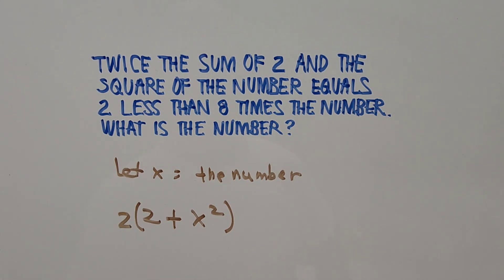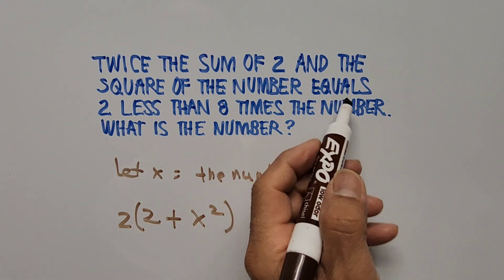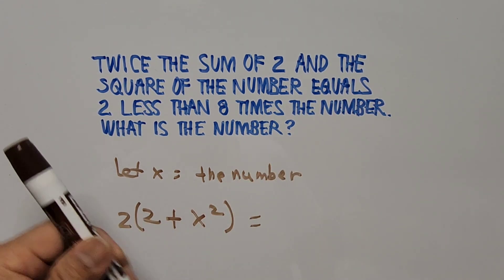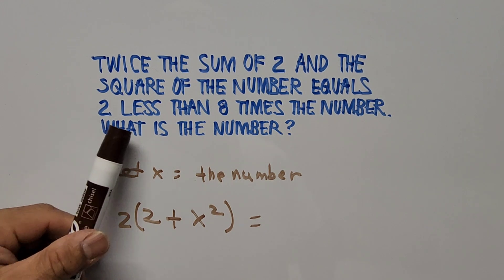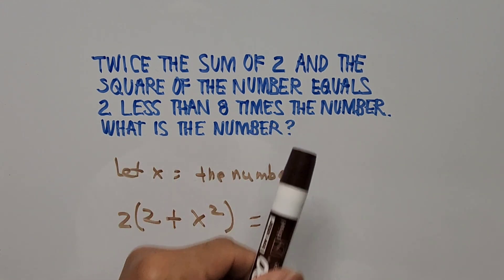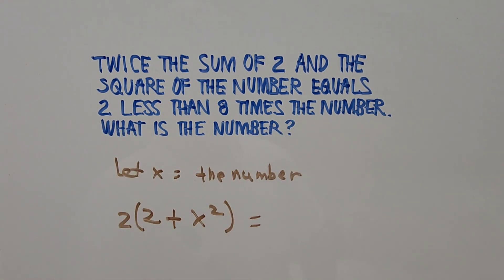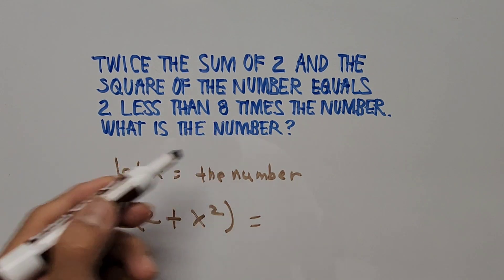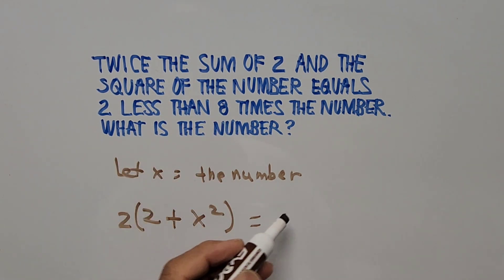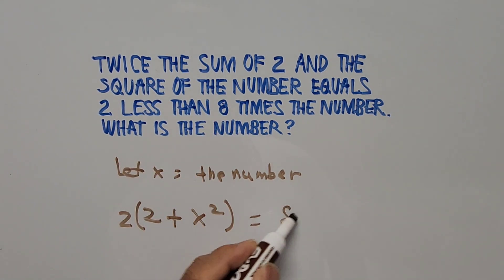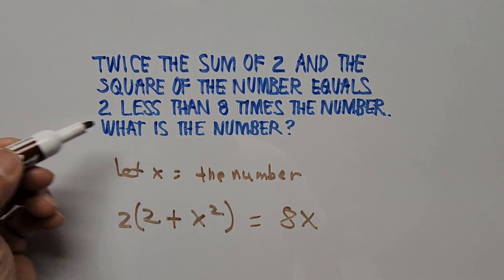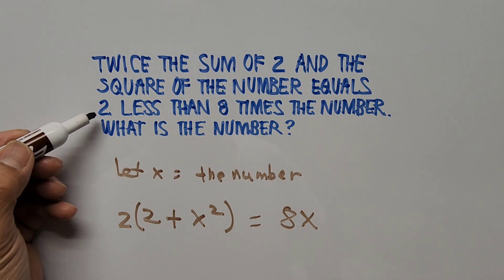Then we have 'equals 2 less than 8 times the number.' The number is X, so 8 times the number is 8X, and since it says '2 less,' that's minus 2. So the right-hand side is 8X minus 2.